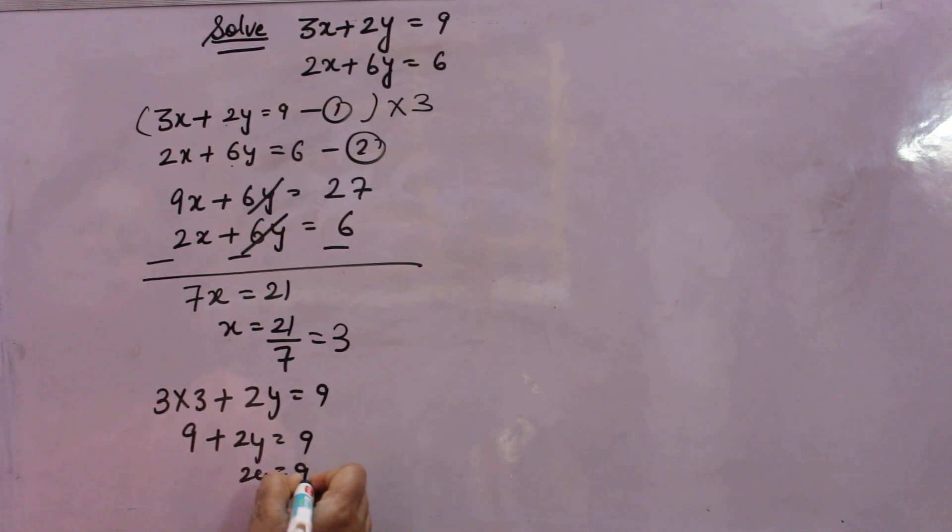So 2y will come 9 minus 9. That is 0. So y will come 0 over 2. That is 0. So x value came 3 and y value came 0. So this is the solution.